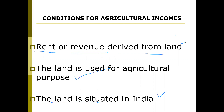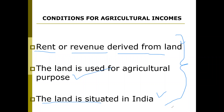These are the three conditions for agricultural income — that if it has to be exempted from income tax, these three conditions should be fulfilled. Even if one condition is not fulfilled, it will not be deemed as agricultural income. It will be deemed as other income and income tax will be levied on that income.